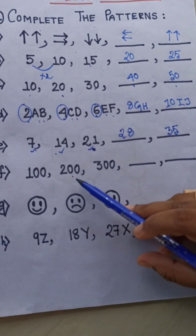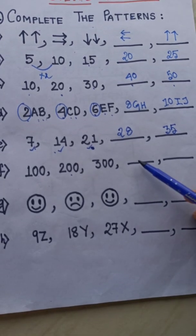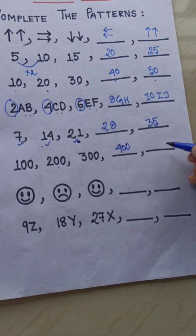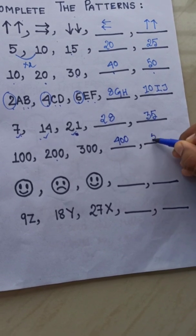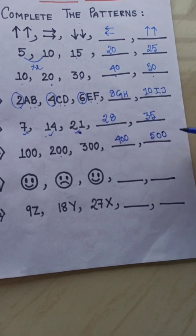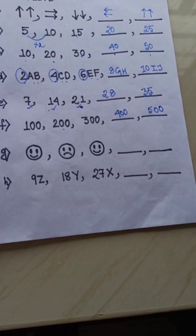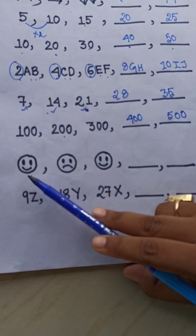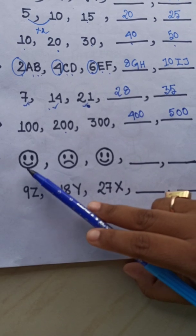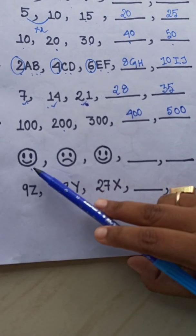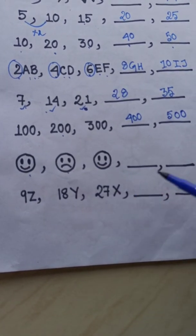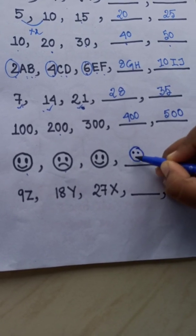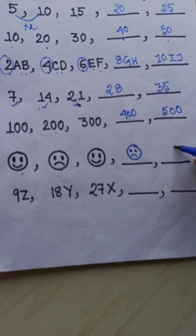Next: 100, 200, 300. So next will be 400, and the very next one will be 500. Next is a very interesting pattern — here we are using smileys. The first one is a happy smiley, then sad, then happy again. So next will be sad, and the one after that will be happy.